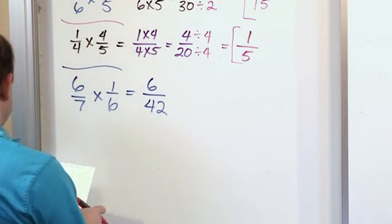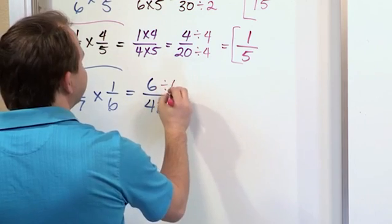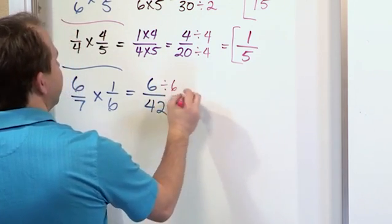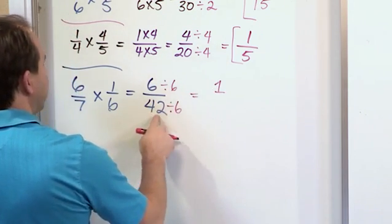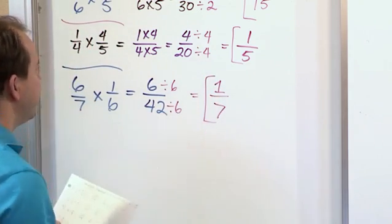So 6/42, that's the answer. We know that we can simplify this because we can divide the top by 6 and the bottom by 6. 6 divided by 6 is 1. 42 divided by 6 is 7. And that's the final answer for that problem.